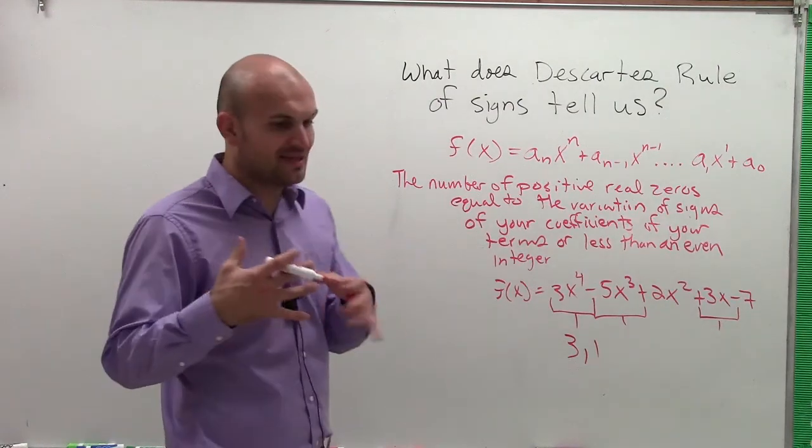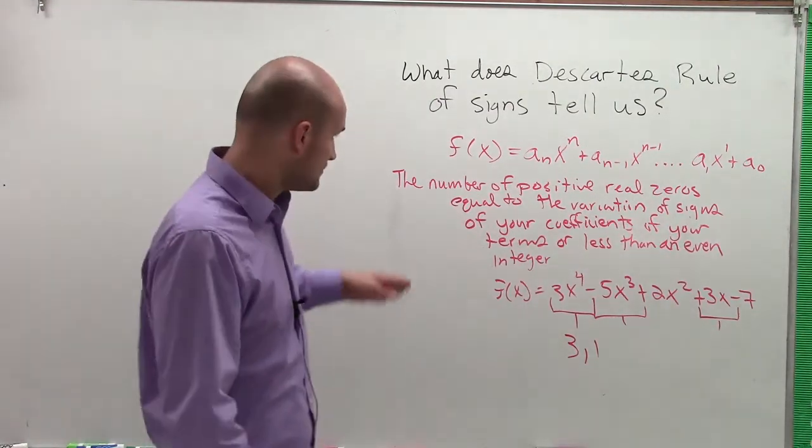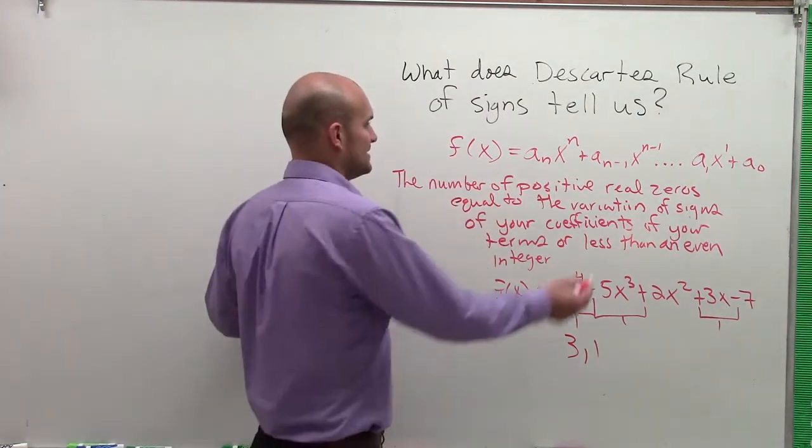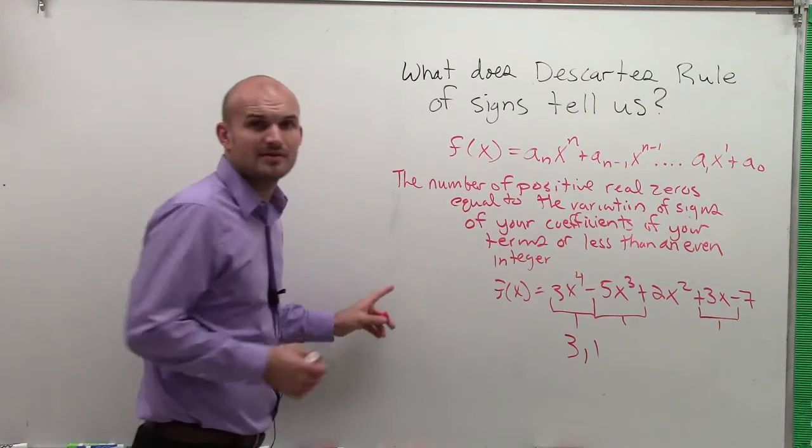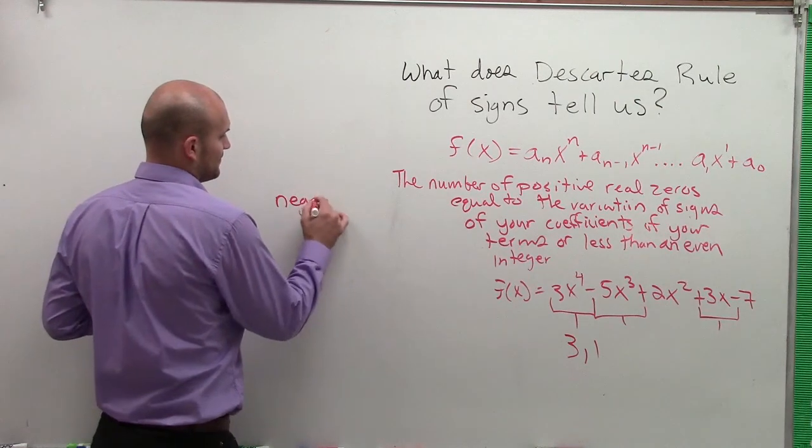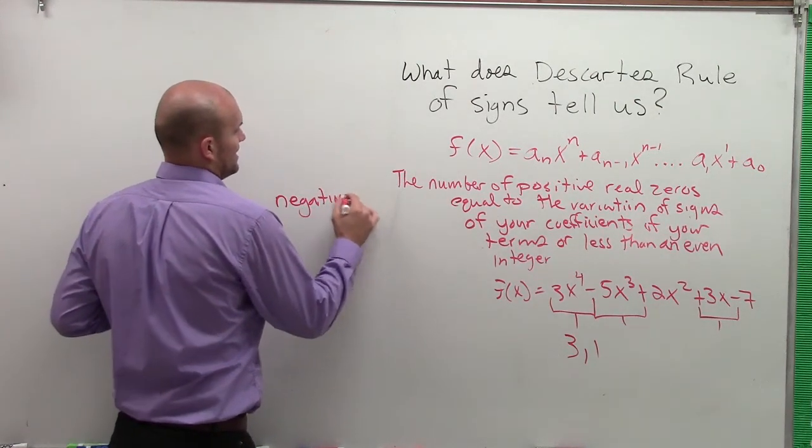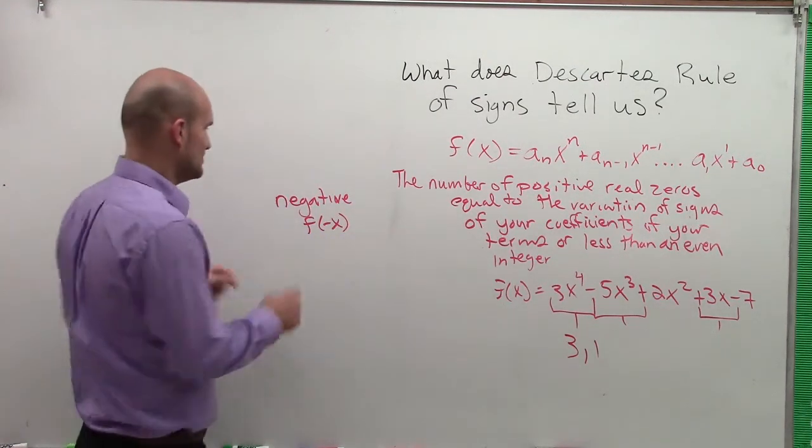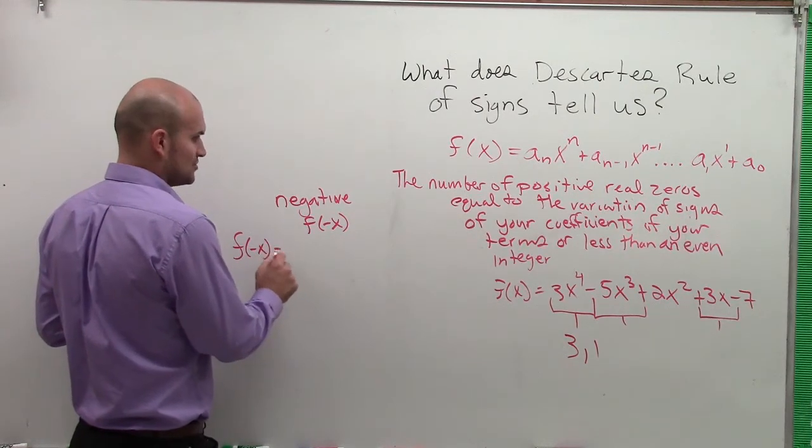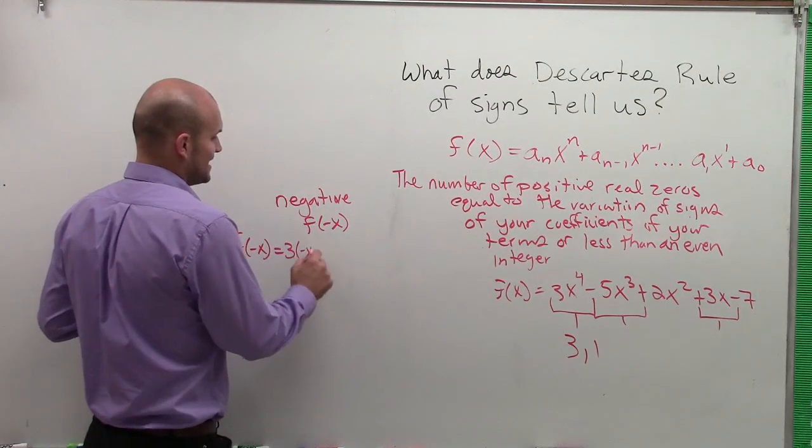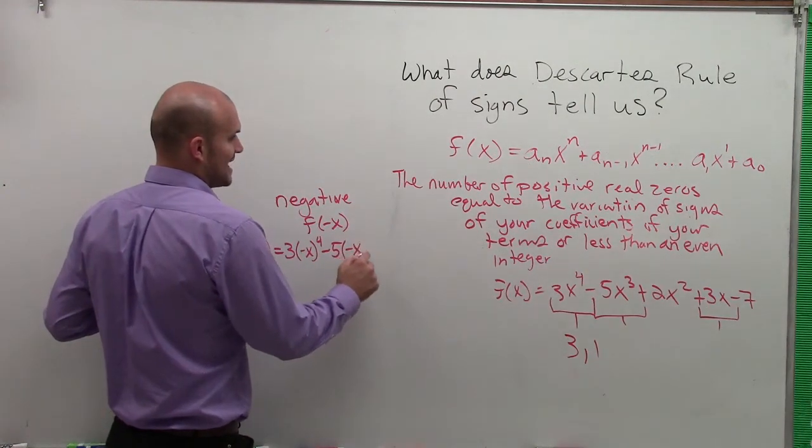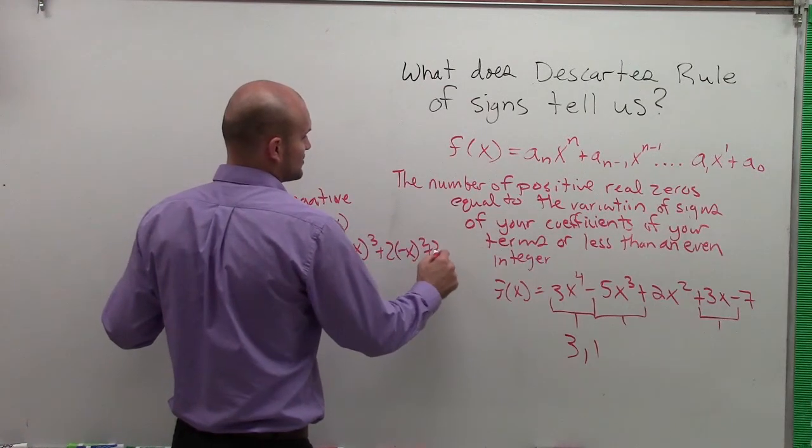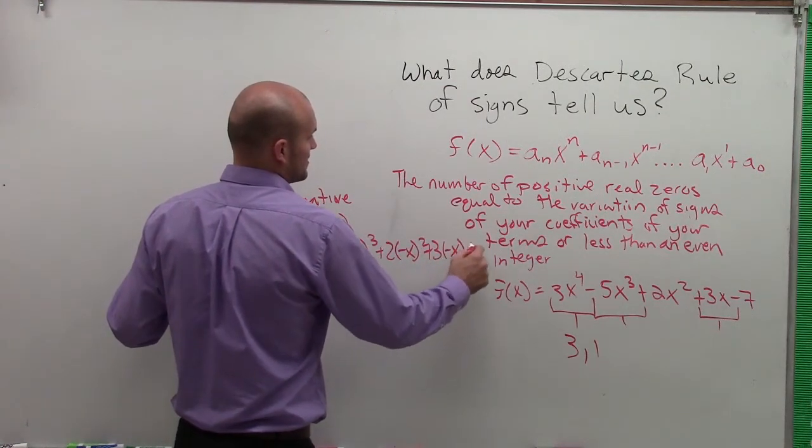Then the next thing I need to do is look at the negative zeros. So the number of negative real zeros is also equal to the variation, but that is the negative. The negative is equal to the variation of f of negative x. So what you're going to do is you're now going to evaluate for f of negative x, which would be 3 times negative x to the 4th minus 5 times negative x cubed plus 2 times negative x squared plus 3 times negative x minus 7.